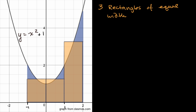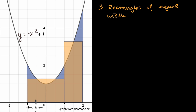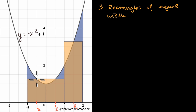Let's make sure this makes sense. We've split up the interval from x equals negative one to x equals two into three equal sections, each with a width of one. If we wanted a better approximation, we could do more rectangles. The width of each is one, and the height is based on the value of the function at the midpoint. The midpoint of the first interval is negative one-half, so its height is negative one-half squared plus one, which is one-fourth plus one, equaling five-fourths. So the area of the first rectangle is five-fourths times one, which is five-fourths.